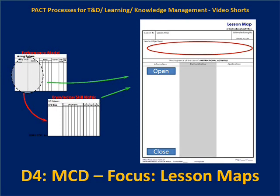We establish what the learner is supposed to be able to do at the completion of this lesson. Once that's clear and we all have shared understanding on the design team, we then move to articulating the final application exercise — what would prove to us, the facilitator, or the computer system for e-learning, that the learner has mastered the learning objectives. We begin with the end in mind in terms of the learning objectives and the final application.